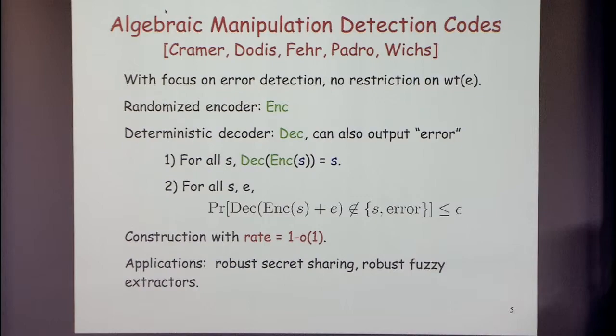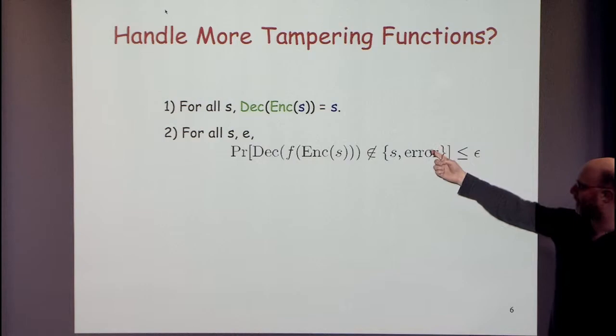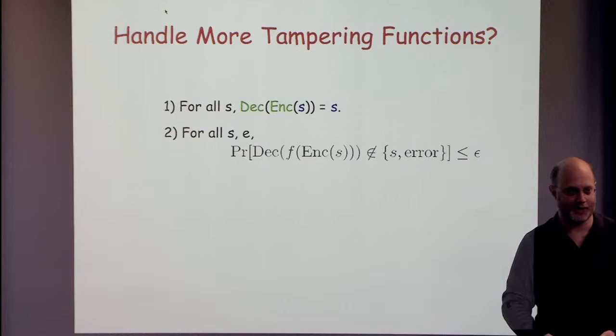A lot of this is motivated by cryptography. It's natural to ask: can we tolerate more tampering functions? We still want the decoder to invert the encoder, and we want the decoder to output either the original message or 'error' with high probability.